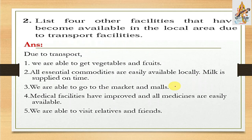The next question — question number two: List four other facilities that have become available in the local area due to transport facilities. The answer: First, we are able to get vegetables and fruits easily. Second, all essential commodities are easily available locally.